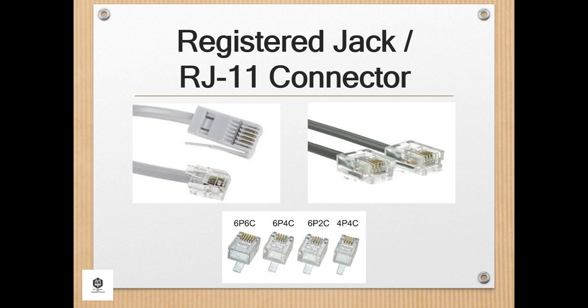The RJ11 connector, or Registered Jack 11, is a telephone interface that uses a cable of twisted wire pairs and a modular jack with two, four, or six contacts. RJ11 is the common connector for plugging a telephone into the wall and the handset into the telephone. More commonly known as a modem port, phone connector, phone jack, or phone line, the RJ11 is a four or six-wire connection for telephone and modem connectors in the US.